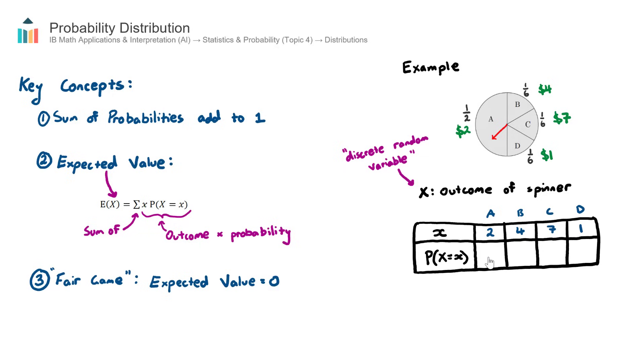For example, this cell here, what is the probability of the outcome of $2? That's this A section. Well, the probability is 1 half. So I can write the associated probabilities here. The next one will be 1 sixth. This will be 1 sixth. And this will also be 1 sixth. So right now we have completed our probability distribution for this particular example.